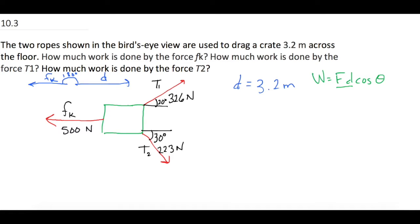For friction, kinetic friction equals the force of 500 newtons times the distance of 3.2 meters times the cosine of 180 degrees, which gives us negative 1600 joules. For T1, work is equal to...